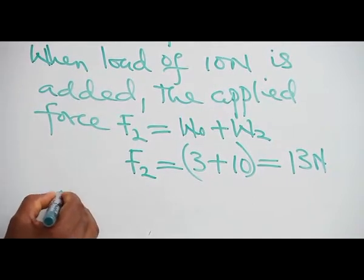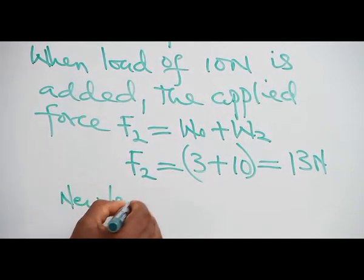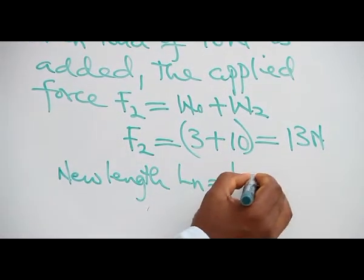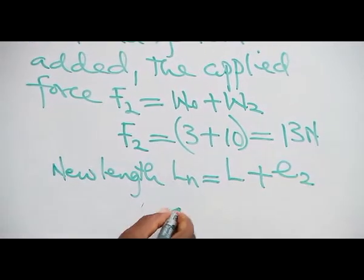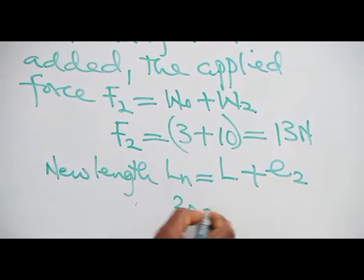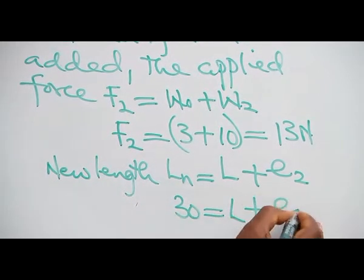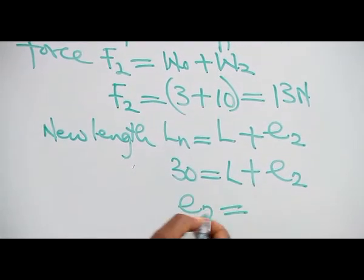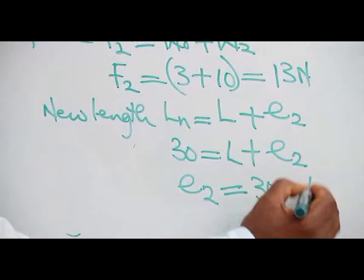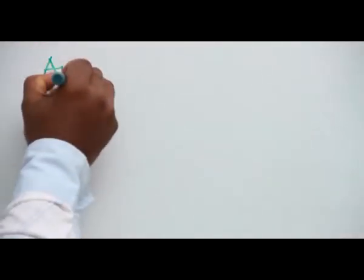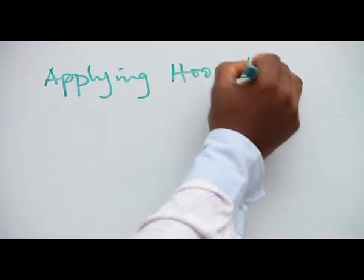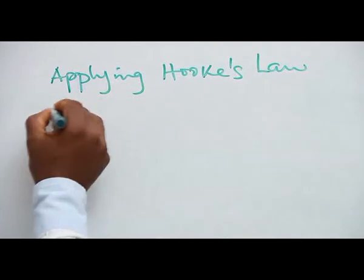New length LN is natural length plus extension 2. 30 will give us L plus E2, so E2 equals 30 minus L. Applying Hooke's law equation...